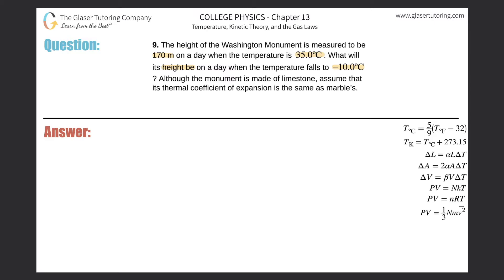So in order to find the change in length—they're talking about height, that's equivalent to a change in length—we would use this change in length formula on the right-hand side. It says that the change in length of a particular object will be equal to that object's thermal coefficient of expansion multiplied by the initial length (I'm going to write L sub i) and then multiplied by the change in temperature.